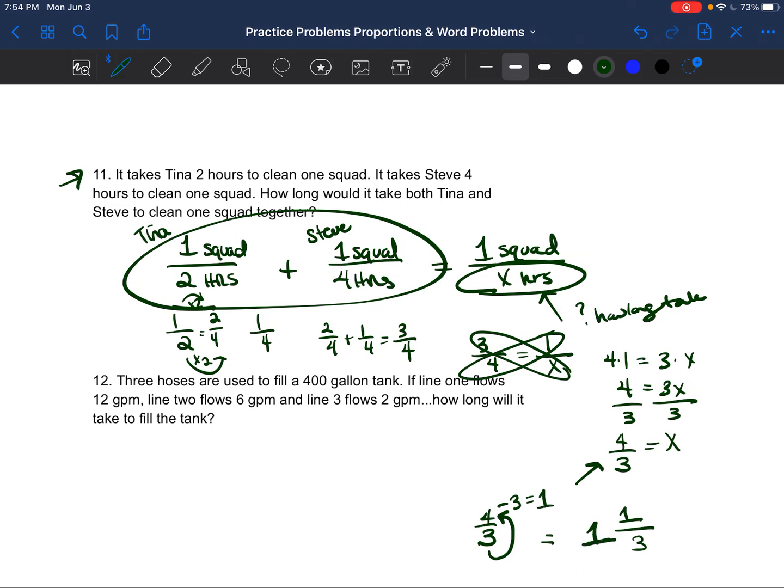But again, you wouldn't say it takes me one and one third hour. You would say it takes me one hour and a certain amount of minutes. So if there's 60 minutes in an hour and you're trying to find a third of that, you would divide it by three. It would be 20 minutes. So one hour and 20 minutes. It would take the two of them to clean one squad car.